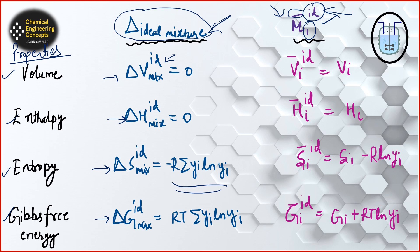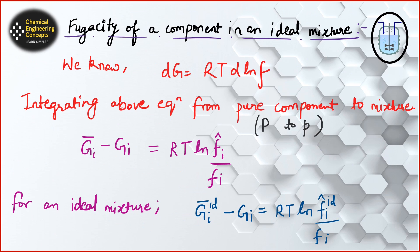So when talking about volumes, the change is zero, meaning the partial molar property equals the pure species property — same for enthalpy. But for entropy and Gibbs free energy, changes do occur in the ideal mixture.